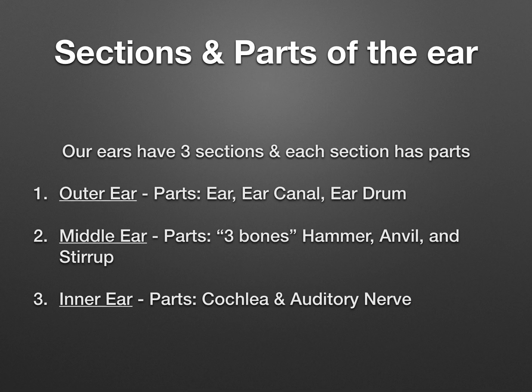There are sections and parts of the ear. The ear is one of the two parts of the body we'll learn about in this unit — the ear and the eye when we get to light. The ear has three sections, and each section has parts to it. The first section is the outer ear, because it's on the outside of your body. Its parts are the ear, the ear canal, and the eardrum. I always remember because the outer ear parts all start with the word 'ear.'